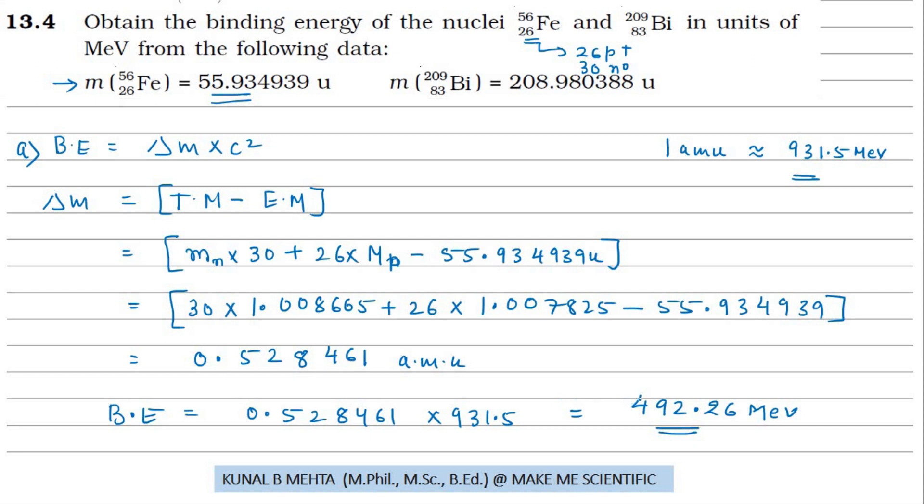Please make sure that this is the total binding energy. If we are asked for the binding energy per nucleon, we have to divide this by the total number of nucleons, which is 56. That answer would be about 8.79 MeV per nucleon.